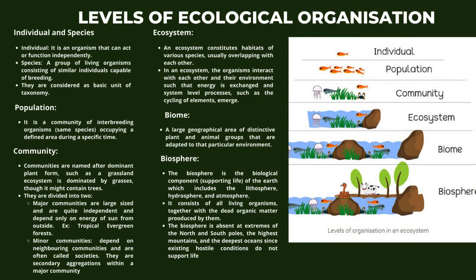Let us now look into levels of ecological organization, starting from individual and species. An individual is an organism that can act or function independently, while a species is a group of living organisms consisting of similar individuals capable of breeding, and is considered the basic unit of taxonomy. Followed by population, which is a community of interbreeding organisms of the same species occupying a defined area during a specific time.